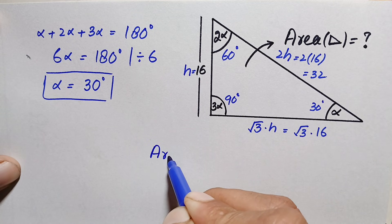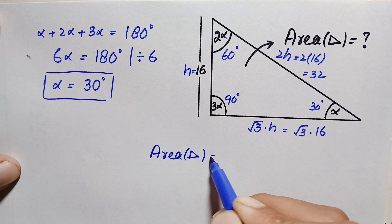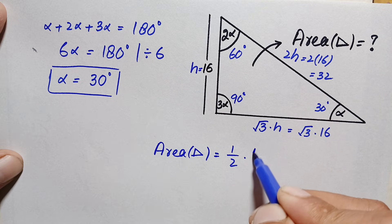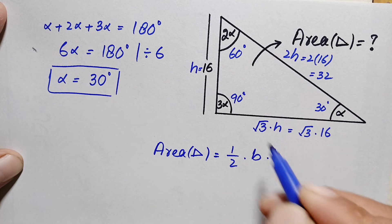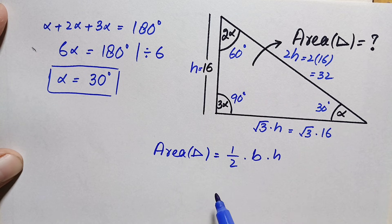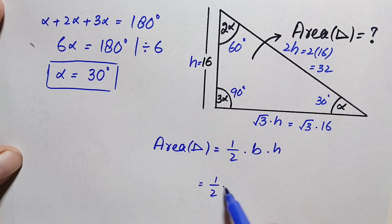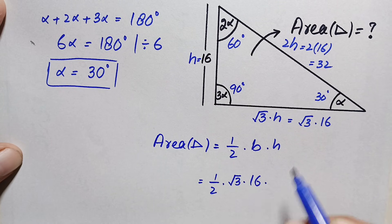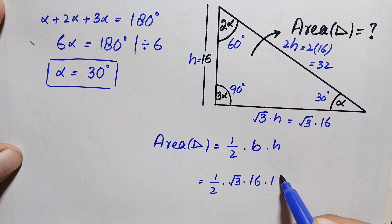The area of the triangle equals ½ × base × height. Substituting the values, the base is 16√3 and the height is 16, giving: Area = ½ × 16√3 × 16.